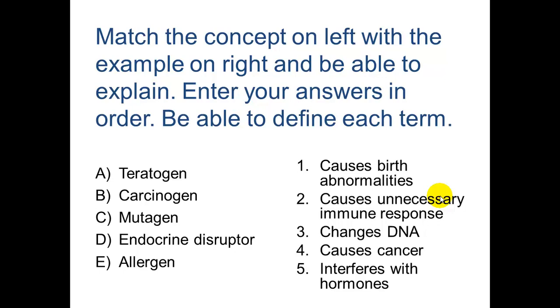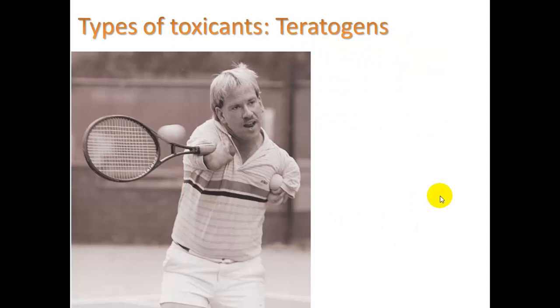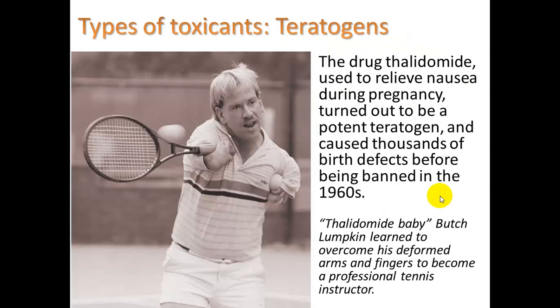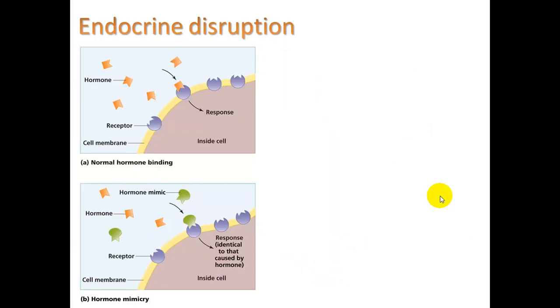The correct matching solution is 1-4-3-5-2. Here is Butch Lumpkin, whose mother took the drug thalidomide to relieve morning sickness during pregnancy. It affected thousands of babies before being banned in the 1960s — a clear case of 'innocent until proven guilty' as opposed to the precautionary principle, which would have required testing the chemical before administering it.